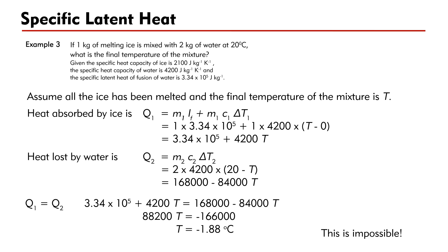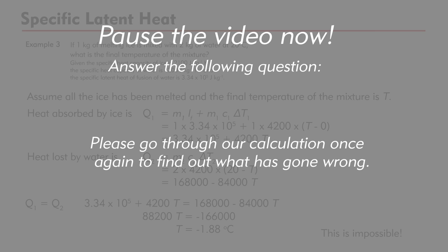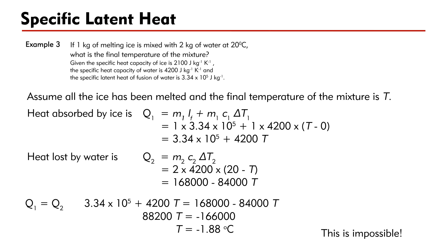Wait — this is impossible because water cannot be at a temperature lower than 0 degrees Celsius. Please go through the calculation to find out what has gone wrong. The culprit is the assumption that all the ice has been melted. If all the ice has been melted, the final temperature of the mixture cannot be below 0 degrees Celsius.